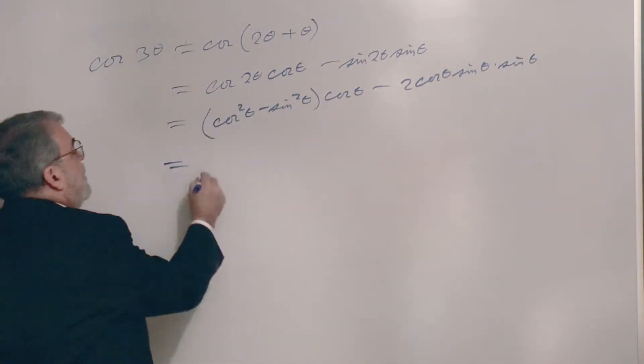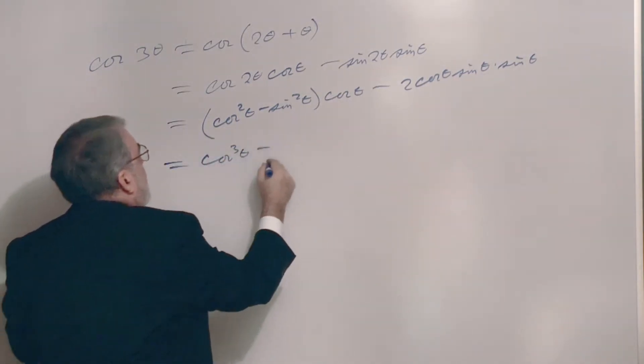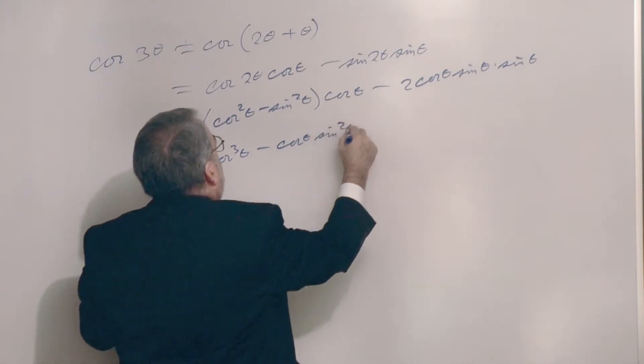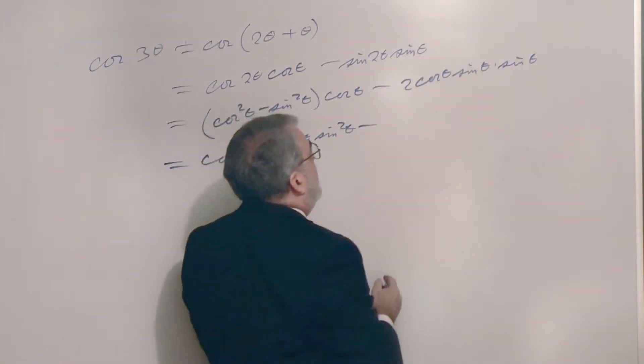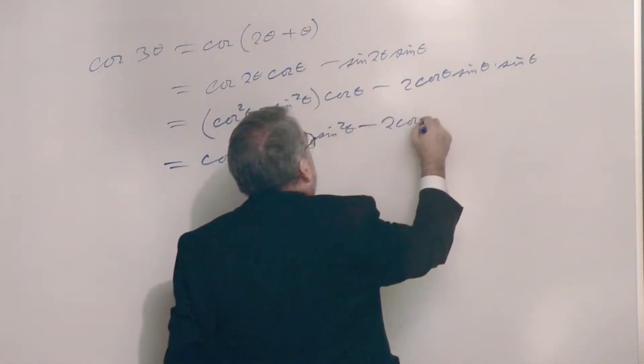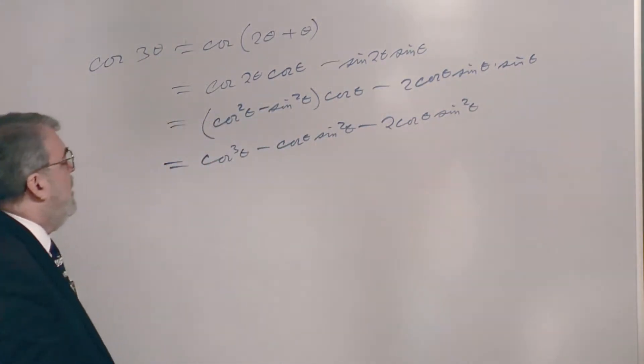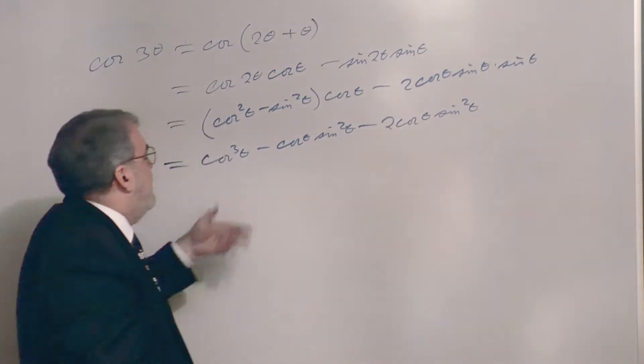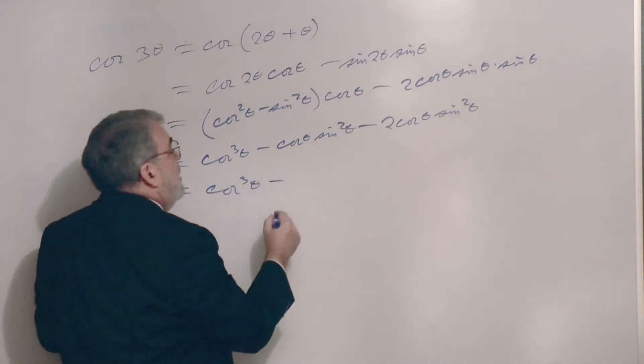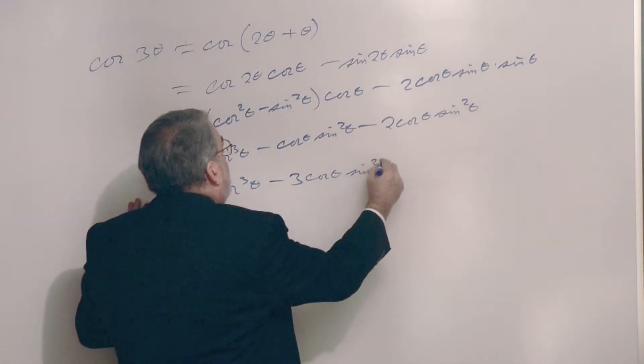I use the double angle identities. For cosine of 2 theta I'll use cosine squared theta minus sine squared theta times cosine theta. And for sine of 2 theta, that double angle identity is 2 cosine theta sine theta, times another sine theta. Let's multiply this through. I've got cosine cubed theta minus cosine theta sine squared theta minus 2 cosine theta sine squared theta, which is minus 3 cosine theta sine squared theta.